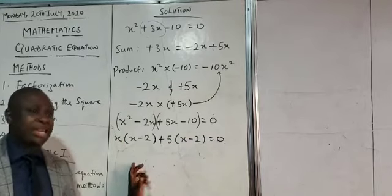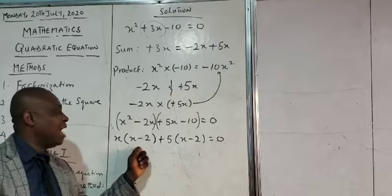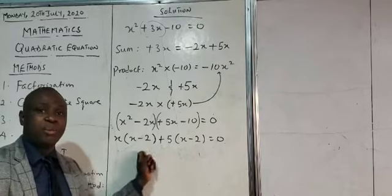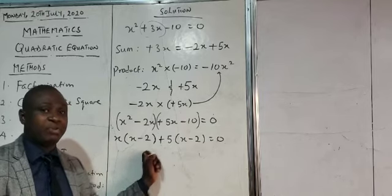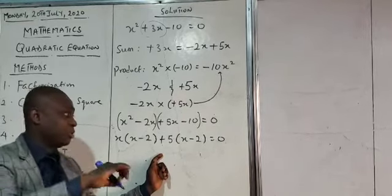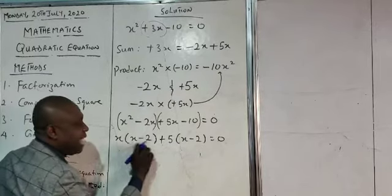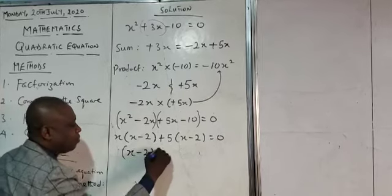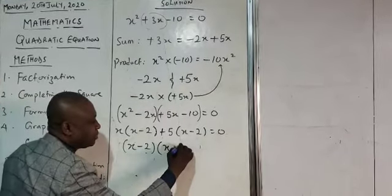Now, a word of caution. Anytime you are solving the quadratic equation, you must have a factor that is the same. That is, we call them repeated factors. If you don't have a repeated factor, then you are wrong. It means something is wrong somewhere. Then you have to retrace your step. So at this point, since I have a repeated factor, I will just have to factor it out. And I will have x minus 2 into x plus 5. And that will be equal to 0.